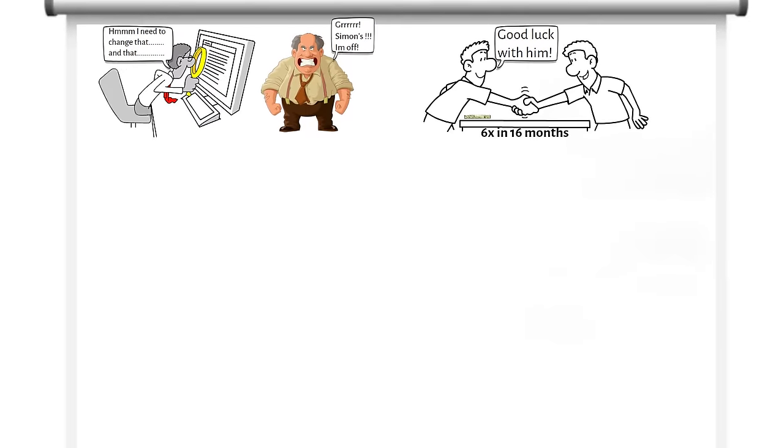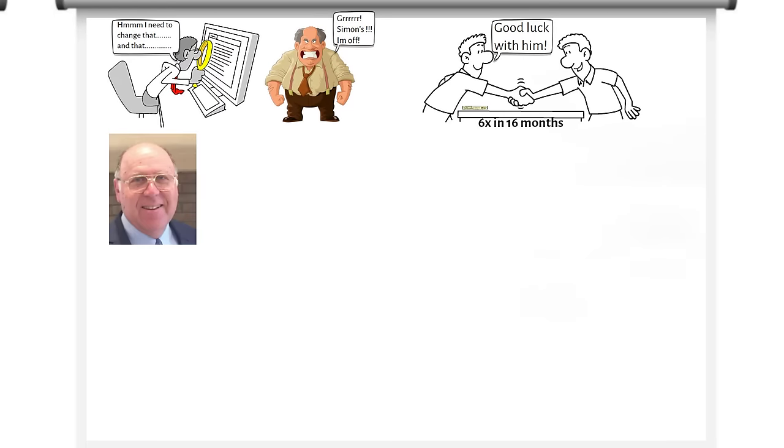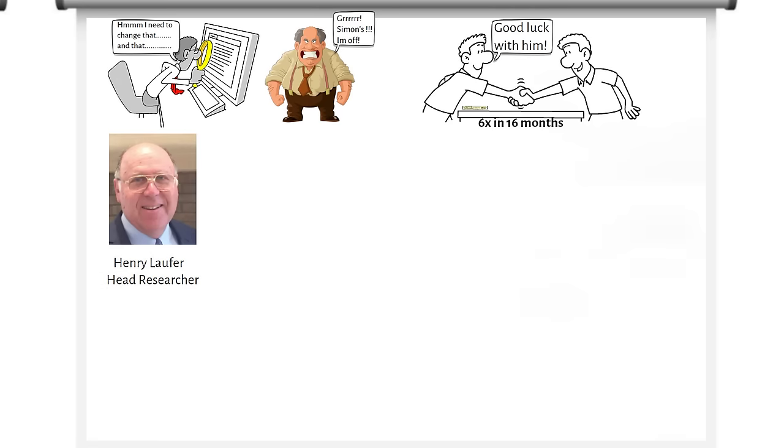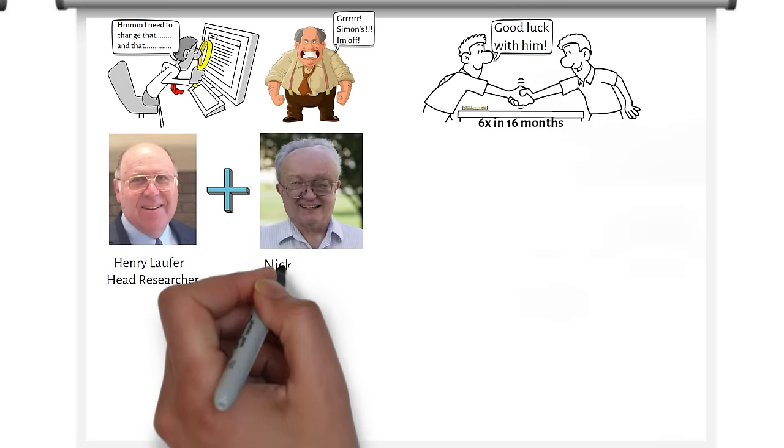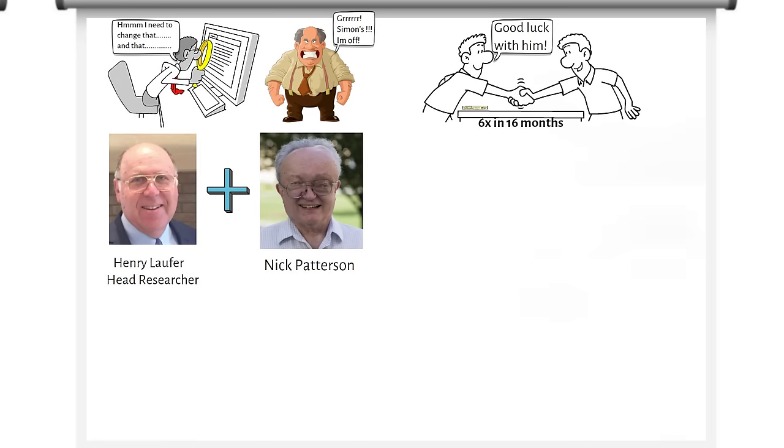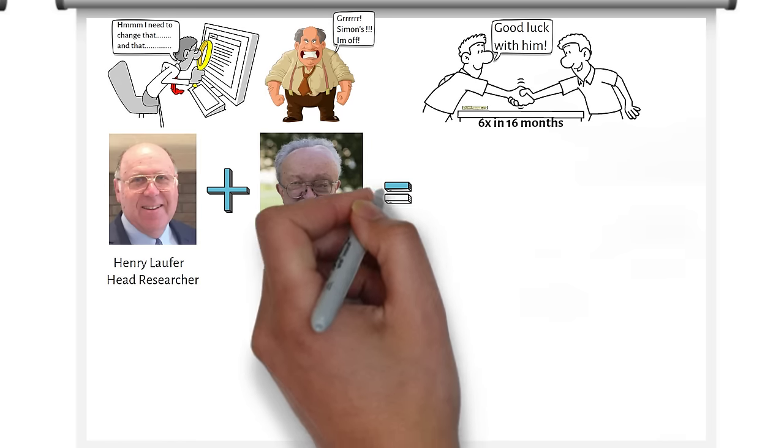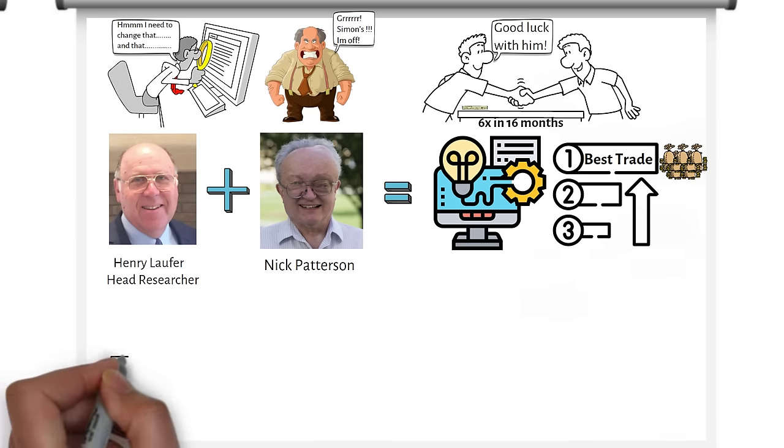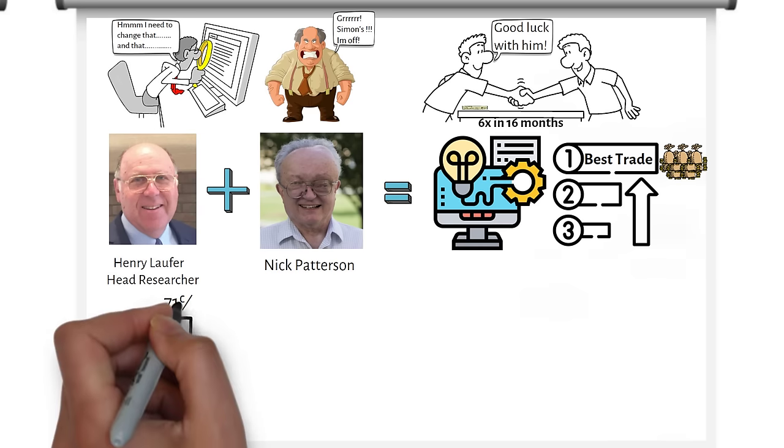After Berlekamp left, Simons asked Henry Laufer, a well-regarded mathematician at Stony Brook, to take up the head researcher role. Laufer, along with Patterson, another mathematician, further improved the Medallion trading system by adding an early form of machine learning, prioritising trades based on probability and position sizing the trades accordingly based on the profit potential. The results swelled at Medallion, with a 25% return in June 1994 alone and a 71% return in the entire year.